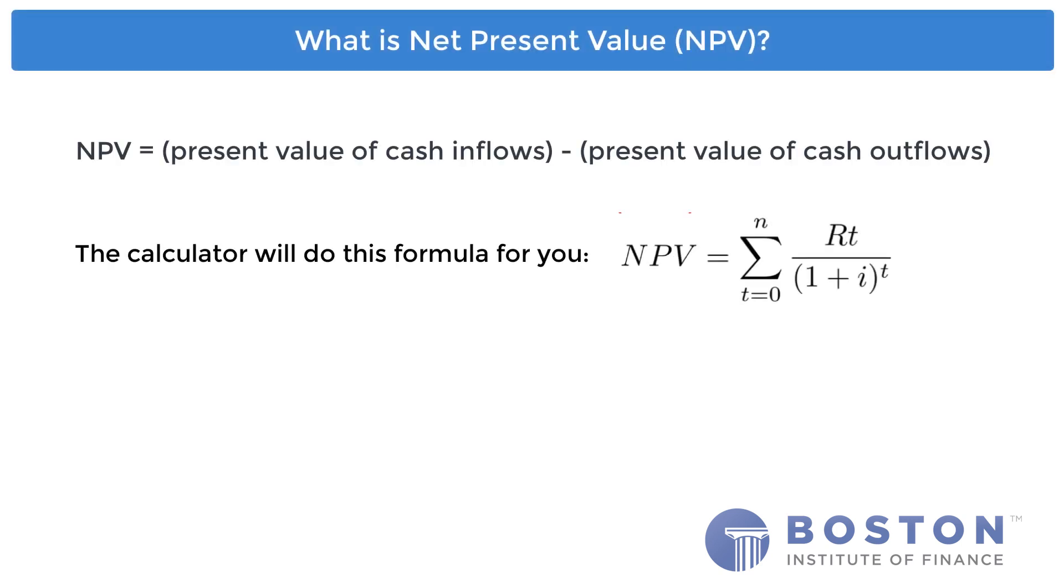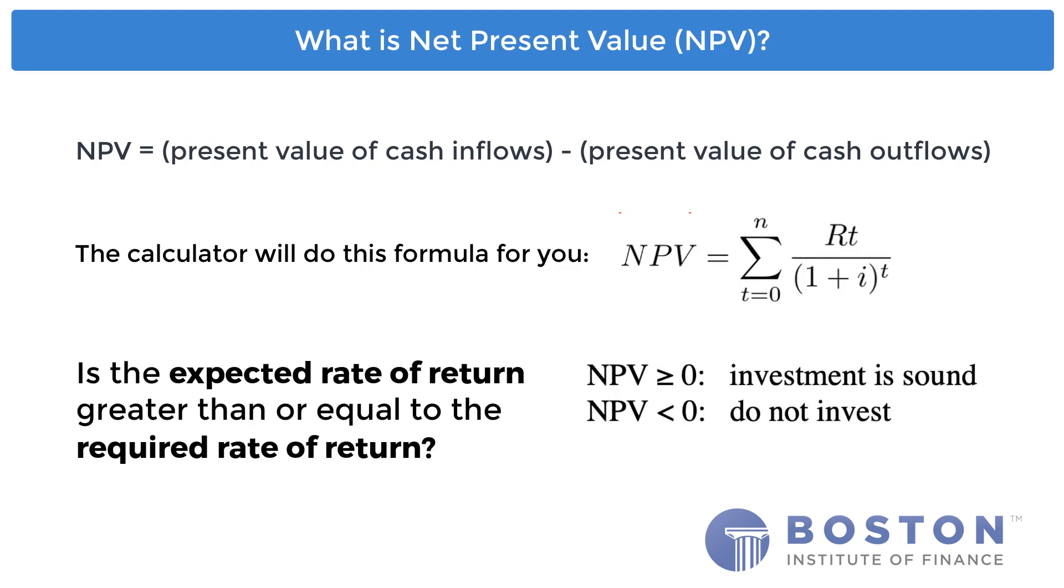Net present value, NPV, is the difference between the present value of cash inflows and the present value of cash outflows over a period of time. The central idea in this calculation is determining if the expected rate of return is greater than or equal to the required rate of return. The HP 12C helps you analyze cash flow information with a given interest rate to determine if an investment makes sense.